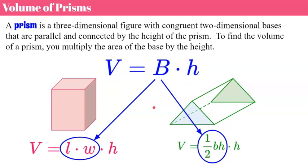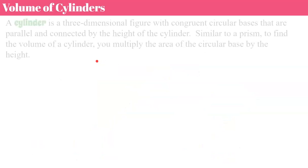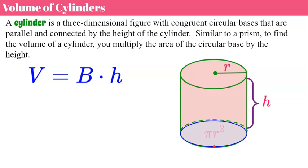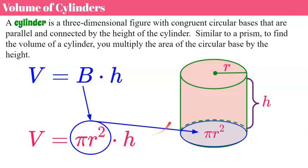Now let's connect finding the volume of a prism to finding the volume of a cylinder. A cylinder is a three-dimensional figure with congruent circular bases. Similar to a prism, to find the volume of a cylinder we multiply the area of the circular base by the height. So we use the same basic formula: volume equals area of the base times the height. For a cylinder, our base is a circle, and the area of a circle is pi times r squared. Replacing the base with pi r squared gives us our formula: volume equals pi r squared times h.